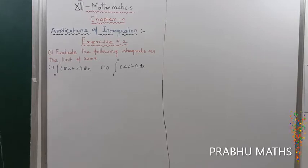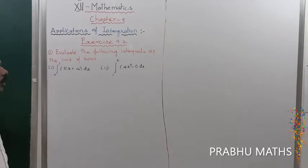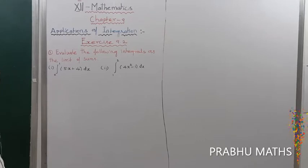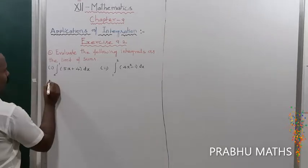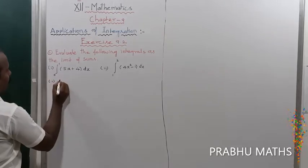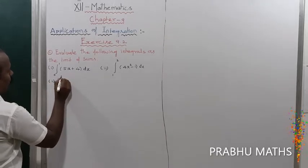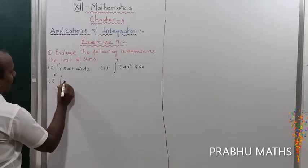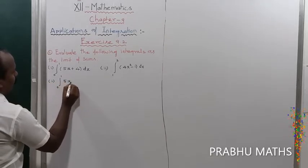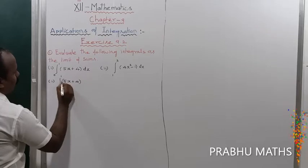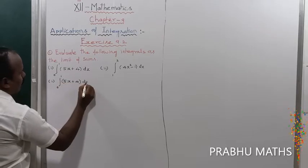Exercise 9.2: Evaluate the following integral as the limit of a sum. The first subdivision is the integral from 0 to 1 of (5x + 4) dx.